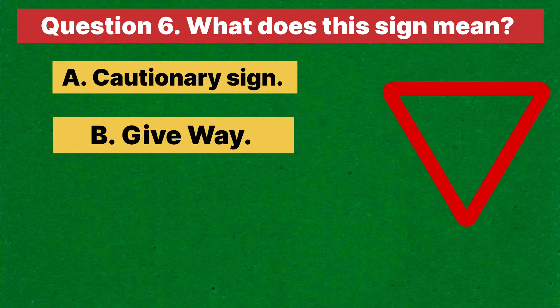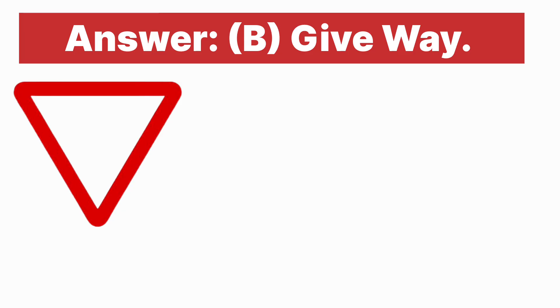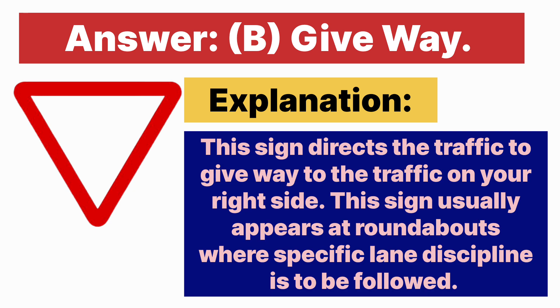Question six: What does this sign mean? A. Cautionary sign. B. Give way. C. Narrow road ahead. D. Widen road ahead. Answer is B, give way. Explanation: this sign directs the traffic to give way to traffic on the right side. This sign usually appears at roundabouts where specific lane discipline is to be followed.